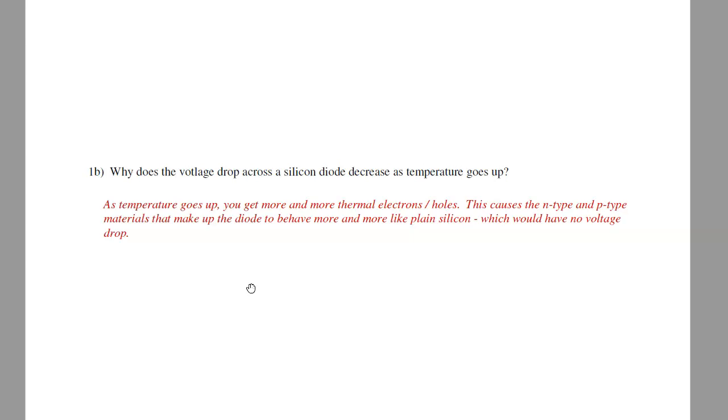Another explanation is the depletion zone comes because you have N-type and P-type semiconductors side by side. As you get more thermal electrons, the doping matters less and less. Eventually, if the doping doesn't matter at all, I no longer have any voltage across the diode. So as temperature goes up, I get closer and closer to zero volts.